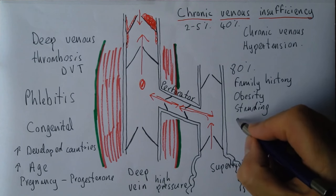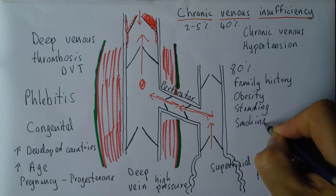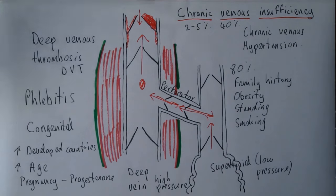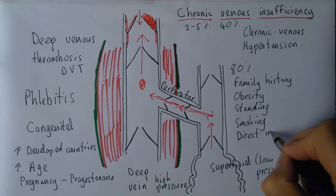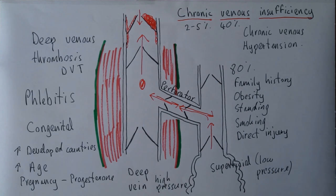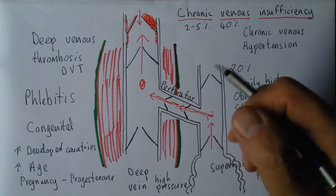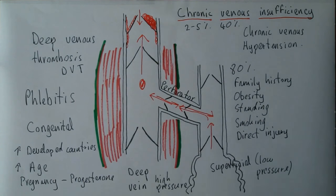Smoking has been shown to be an aetiological, causative factor — in men at least — although overall this condition is more common in women, perhaps because of the progesterone effect. Then there are injuries: direct injury to the veins damaging the valves, and also indirect injury. A patient who had fixation of the ankle joint could not move their ankle and was unable to use the calf muscle pump effectively, developing chronic venous hypertension and chronic venous insufficiency syndrome.